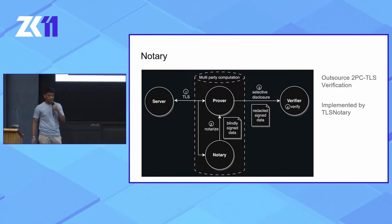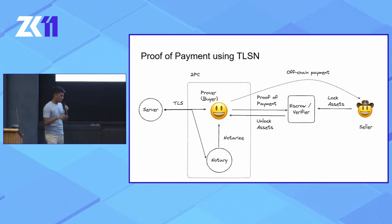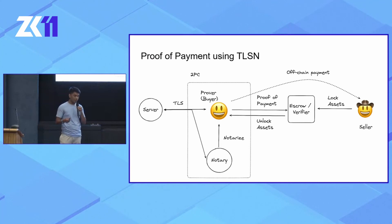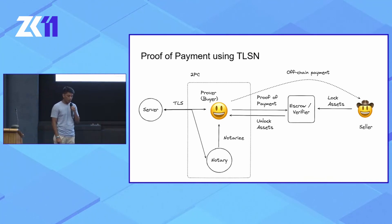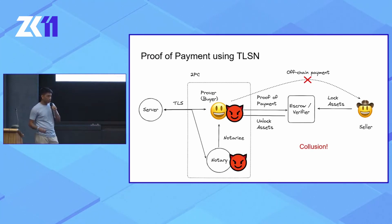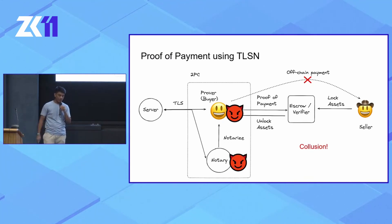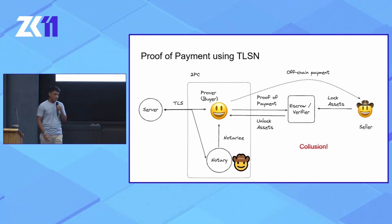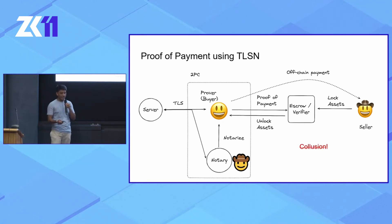Now we have a protocol to generate TLS proofs, and we can use that in ZKP2P to generate proof of payment — in our case, the buyer would be the prover. But there's a catch: because we're outsourcing the 2PC TLS verification to a third party, a malicious notary could collude with the prover and generate a fake proof of payment — one that did not actually happen. To solve that, one solution is to make the seller be the notary. A rational seller would not collude with the prover because it's their assets at stake.